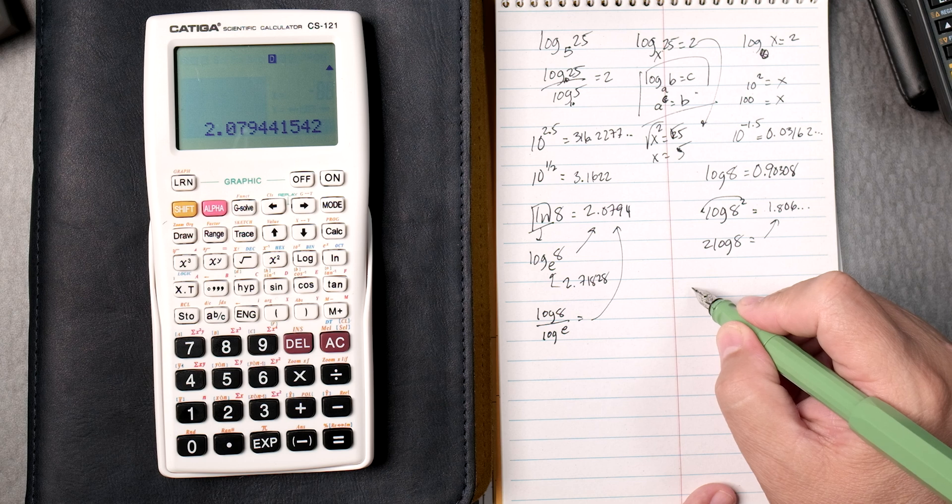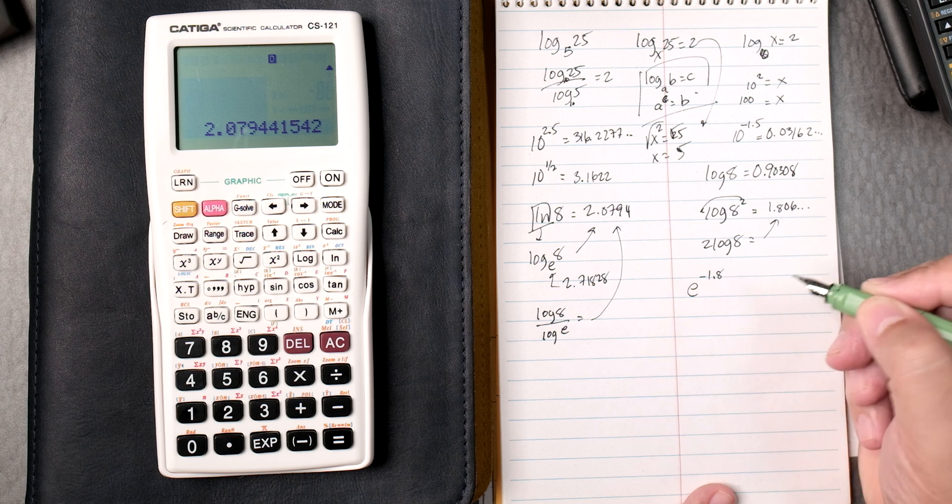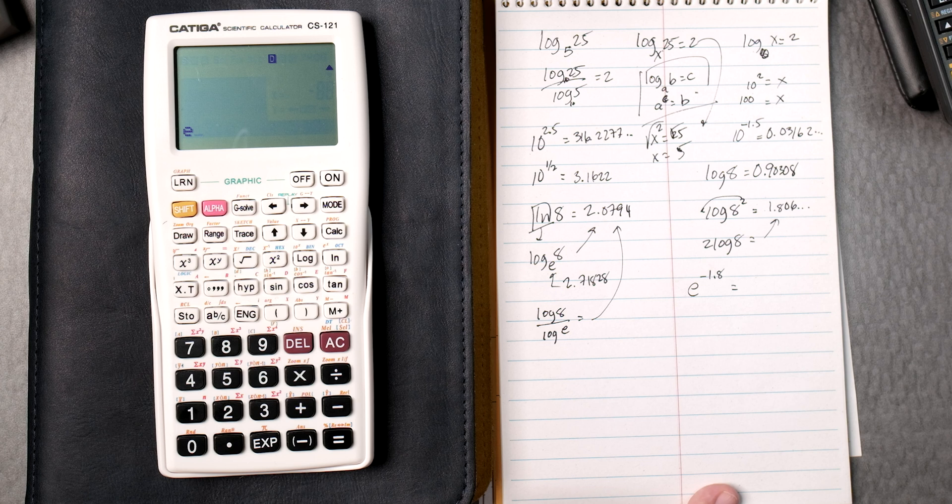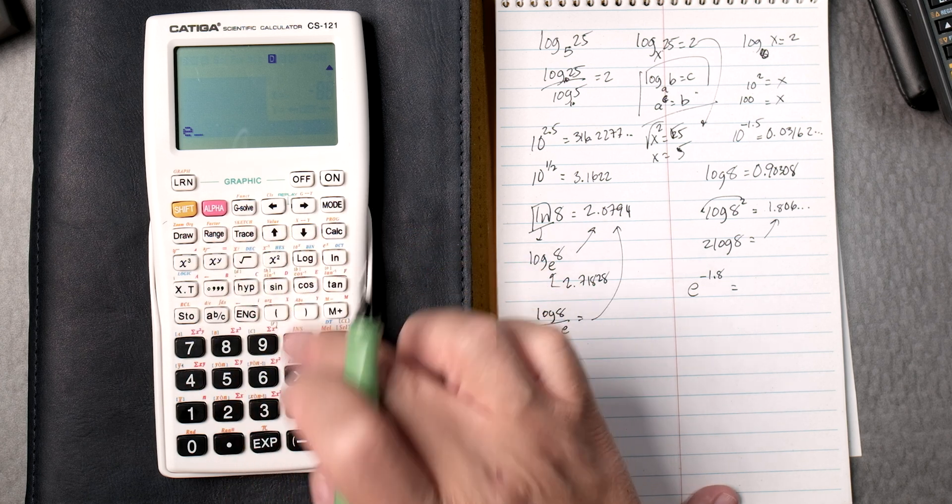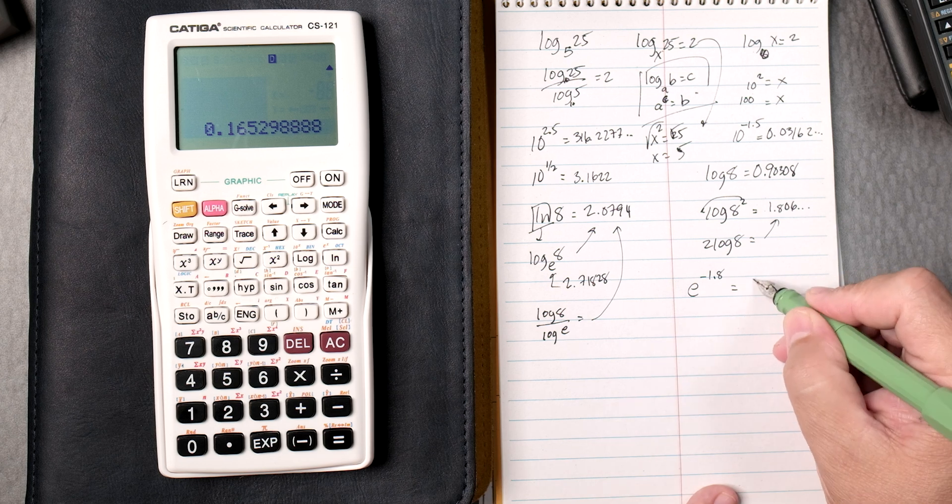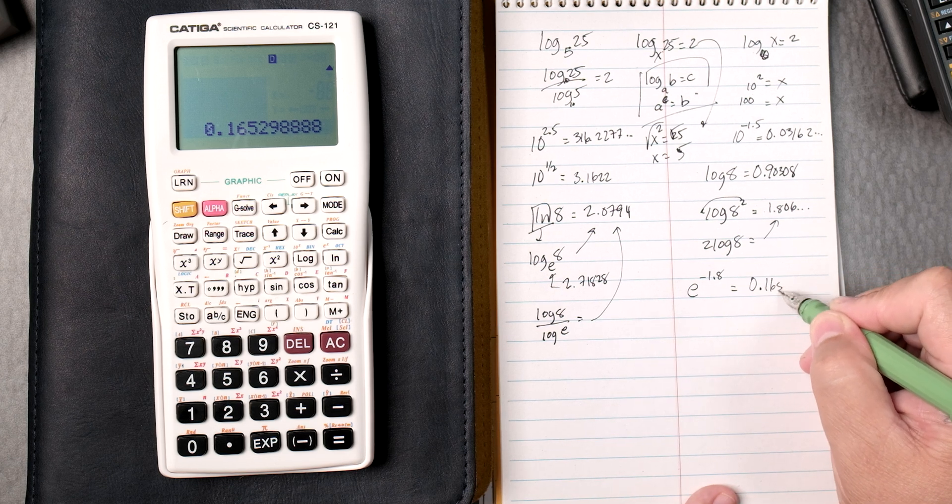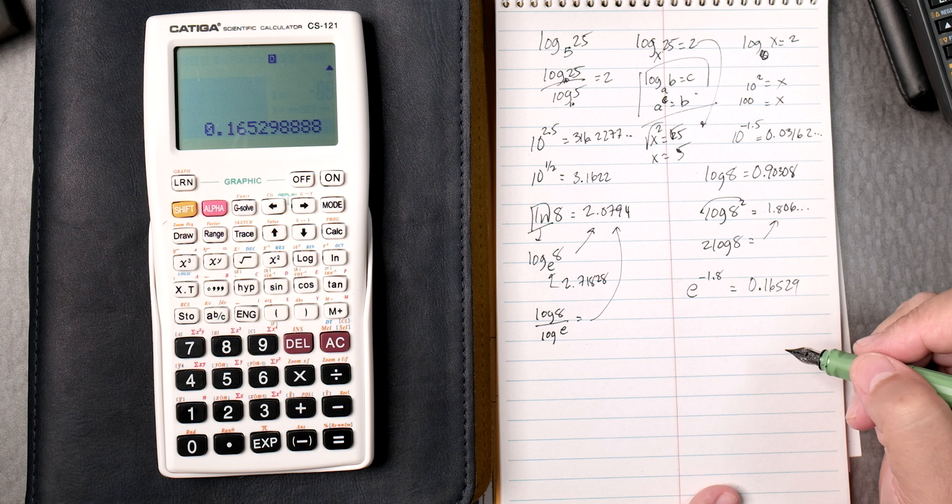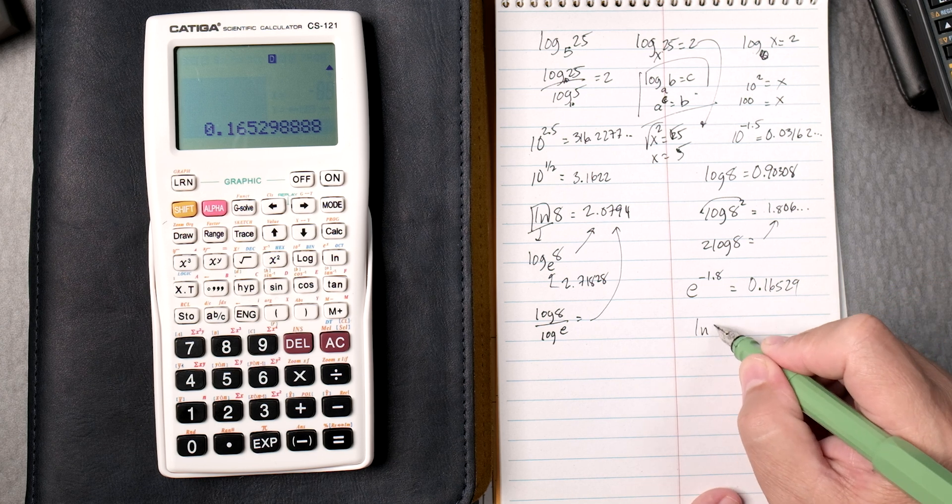All right, so we're going to take e to the negative 1.8. So shift e to the x, negative which is down here, 1.8 equals, and we get 0.16529.